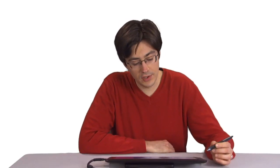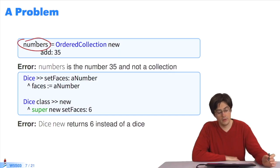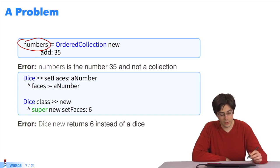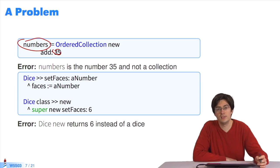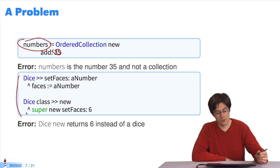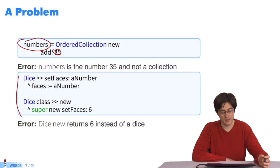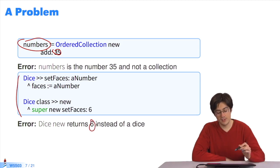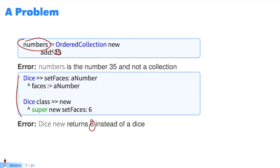In this example, we want to have a collection of numbers in numbers. And for the moment, there's only one number there, 35. However, if we see what's in numbers, it's not a collection, it's the number. It's the number 35, so there's a problem. In the same way, in this code, if I send the message new to the dice class, I get the number 6 rather than a six-sided die. It's the same problem in both examples.